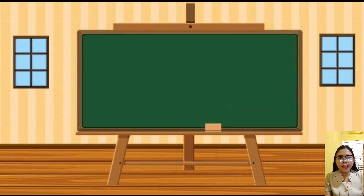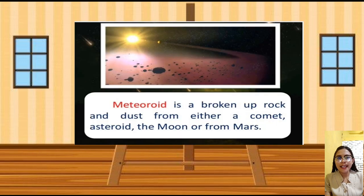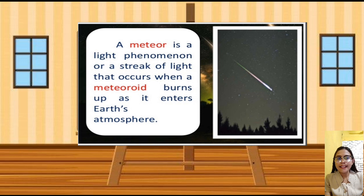What is a meteoroid? Where do you think they came from? A meteoroid is a broken-up rock and dust from either a comet, asteroid, the moon, or from Mars. While a meteor is a light phenomenon or a streak of light that occurs when a meteoroid burns up as it enters the Earth's atmosphere.